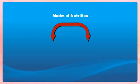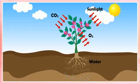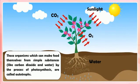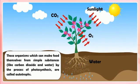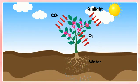Modes of Nutrition. All the organisms can be divided into two main groups: Autotrophs and Heterotrophs. Autotrophs are those organisms which can make food themselves from simple substances like carbon dioxide and water by the process of photosynthesis. They are called autotrophs and their mode of nutrition is called autotrophic.